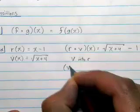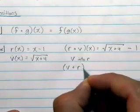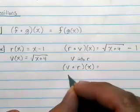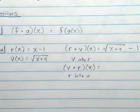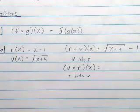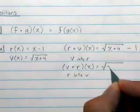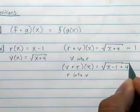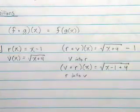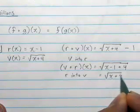So this is going to be the square root of x plus 4, minus 1. And we could go the other way with it too: v of r of x. In that case, we're going r into v. We take the entire r function and drop it into v where the x is. So we'd have the square root of, now not just x but x minus 1, and then we still have that plus 4. We end up with the square root of x plus 3 as that composition.